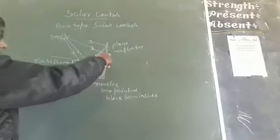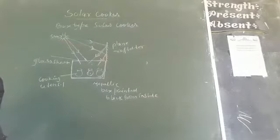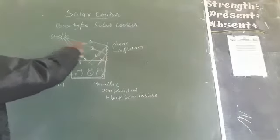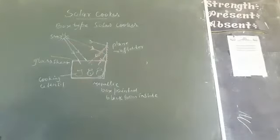The reflector is faced towards the sun so that the light of the sun falls on the reflector and after that it will fall inside the box.